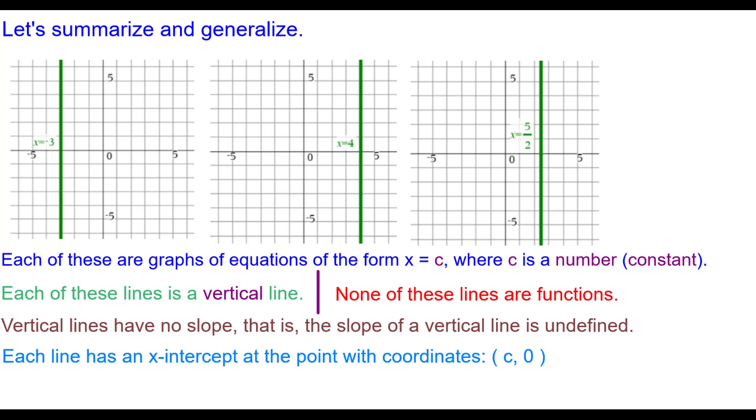And each line has an x-intercept at the point with coordinates whatever the constant is, comma 0. For example, this one, x equals negative 3, it's negative 3 comma 0 is the x-intercept. x equals 4, 4 comma 0. x equals 5 halves, 5 halves comma 0.